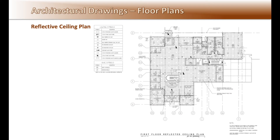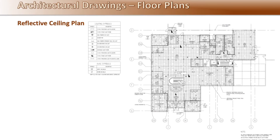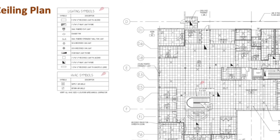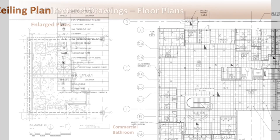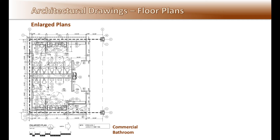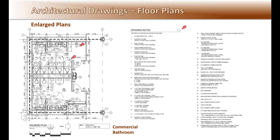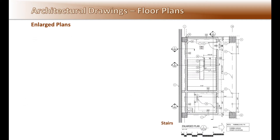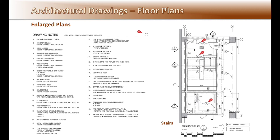An example of a reflected ceiling plan — note the legend with the fixtures and HVAC grills. An example of an enlarged plan showing a commercial building bathroom with all the fixtures and specialty items. Note the hexagon with numbers that refer to the legend describing all the bathroom items. Here is also an enlarged stair floor plan; note the hexagon note legend, which makes it much easier for the designer and contractor to identify materials.